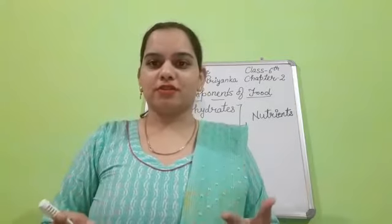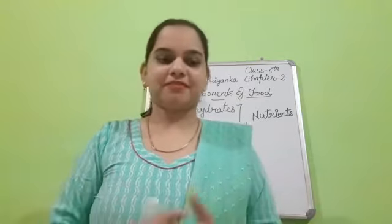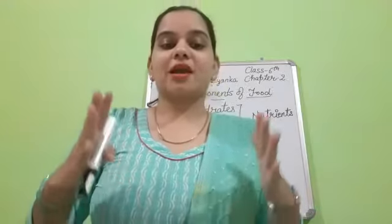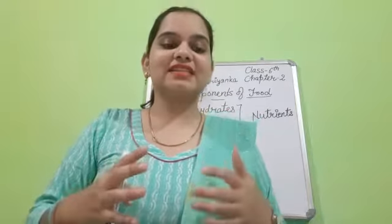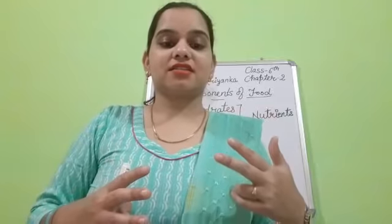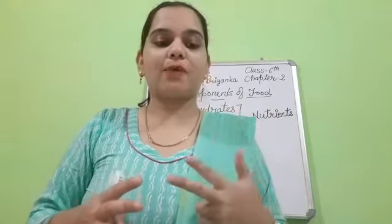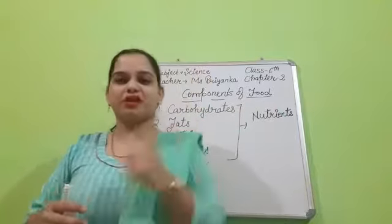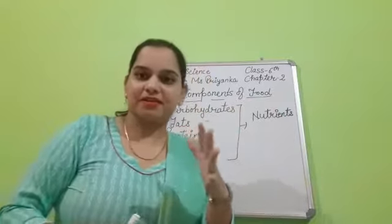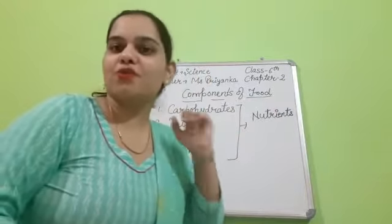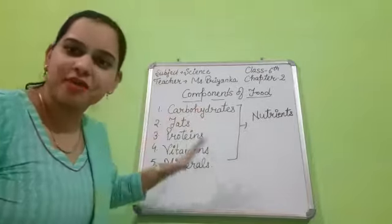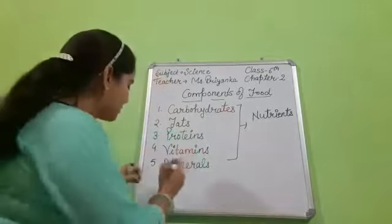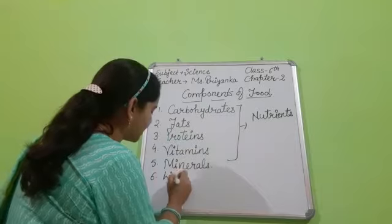We want food to survive. Now, seven components are present in the food and these are carbohydrates, proteins, fat, vitamins, minerals, fiber and water. But the main components of food are five. However, fiber — which you studied in previous year — the fiber component.